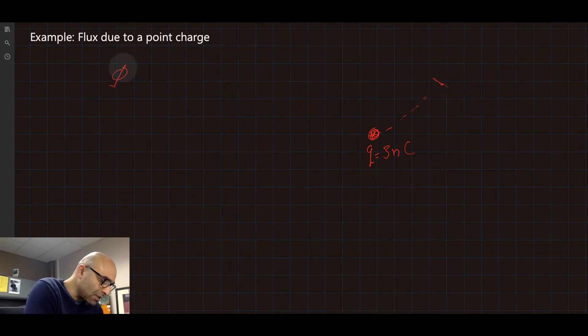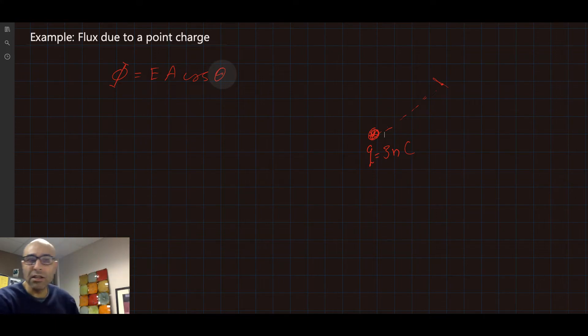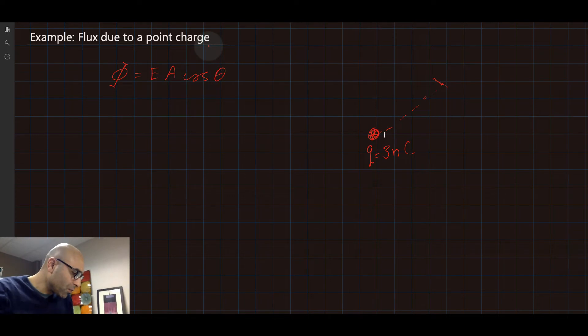We know that the flux is equal to EA cosine theta, that's the flux for electric field. We actually don't know the value of the electric field and we don't know the value of the area, so we don't have that. So that probably will not be a good approach.